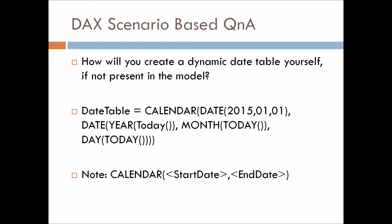Let's move to the next question: how will you create a dynamic date table yourself if one is not present in the model? Sometimes the backend team doesn't provide a separate date table, so we can make use of the CALENDAR function or the CALENDARAUTO function — but the preference should be the CALENDAR function. As you can see here, the CALENDAR function takes two arguments: start date and end date.